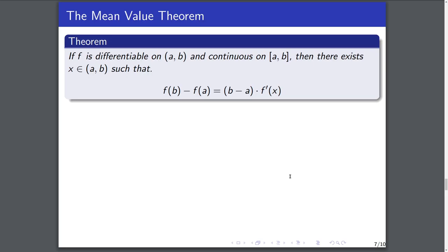We'll now use Rolle's theorem to prove the mean value theorem. The rigorous statement is that if f is differentiable on the open interval and continuous also on the endpoints, then there's some point x such that f of b minus f of a equals (b minus a) times f prime of x. Note we still require continuity at the endpoints — a hint we'll use Rolle's theorem. Another way to view this is that there's some point where the average slope precisely equals the instantaneous rate of change.